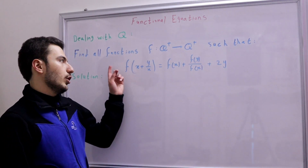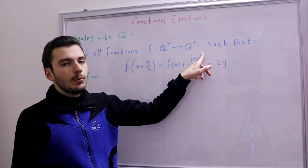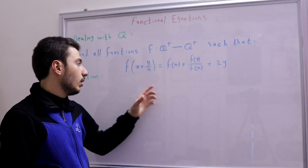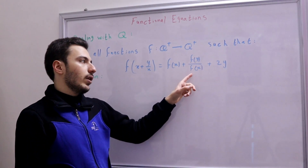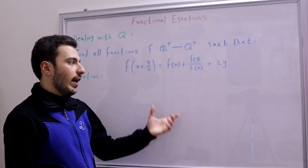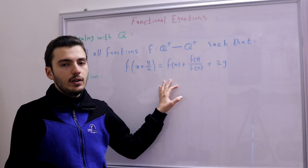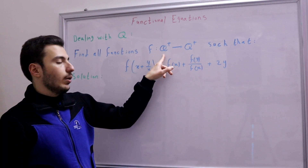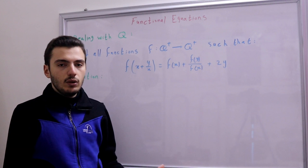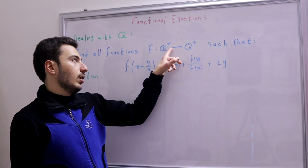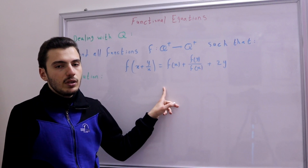In this problem, we're asked to find all functions f from Q positive to Q positive, such that the following functional equation holds: f of (x+y)/x equals (f(x) + f(y)) / (f(x) + 2y). Here we cannot substitute with any real number — since this is Q positive to Q positive, we can only substitute with positive rationals. We cannot substitute zero, so we can only use values like one, two, or any positive rational.